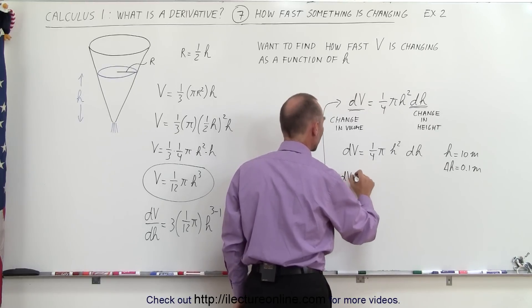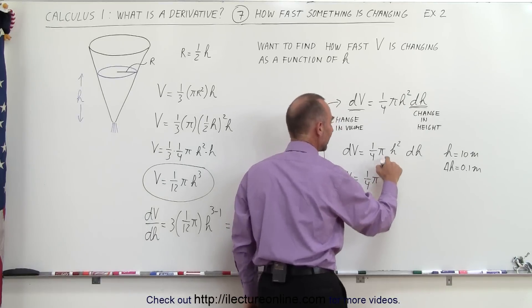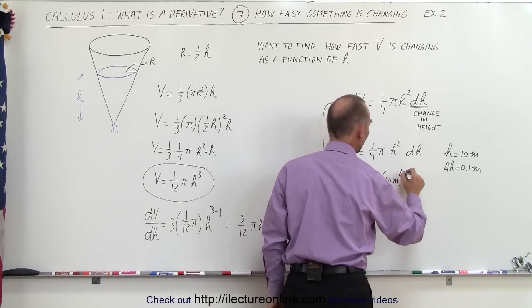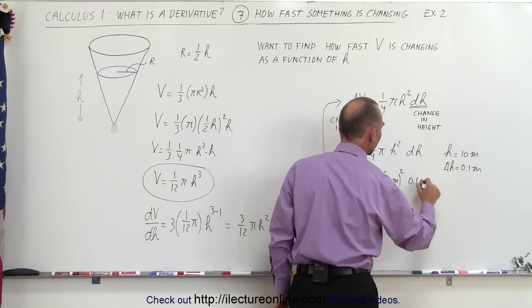What will be the change in the volume when the height changed by one-tenth of a meter when the height was already 10 meters? So the change in the volume would be equal to one-quarter times π times the height squared, 10 meters squared, times the change in the height, which would be 0.1 meter.